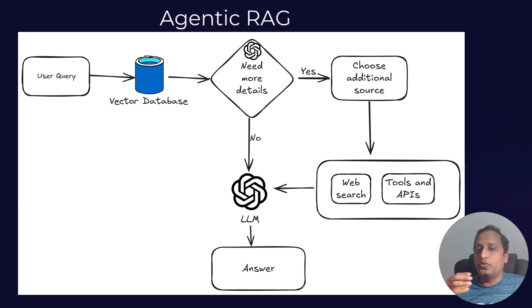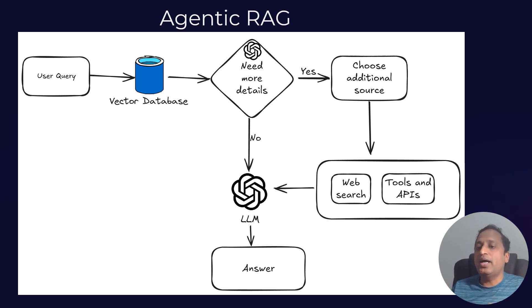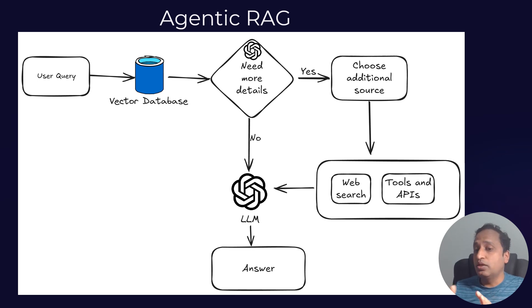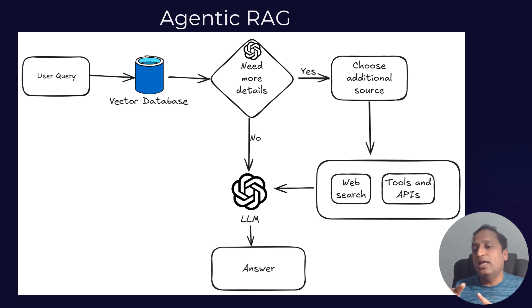Now let's talk about agentic RAG. The process of storing data in the vector database remains the same. The key difference is that instead of directly giving retrieved context to the LLM, there is an additional check — we ask the LLM: 'I retrieved this context for this query; are you able to answer the user's question using this context?' The LLM might say yes, or it might suggest what tools to use, such as a web search with a specific search query or invoking an external API.